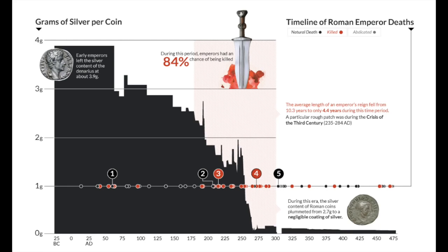As those tumultuous times took place, with infighting, disagreement, and assassinations, the silver content of the denarius plummeted from 2.7 grams to almost nothing. It got to the point where it was just a bronze coin coated in a very thin layer of silver — essentially dipping the bronze coins in silver. They completely watered down the currency, inflated it, similar to today's fiat.